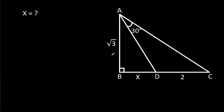In this video, we have been given a right angle triangle in which angle CAD is 30 degrees, AB is square root of 3, CD is 2, and BD is X. We have to find X.